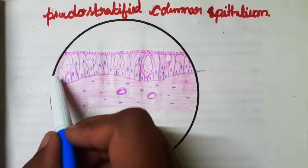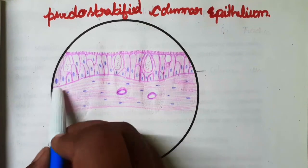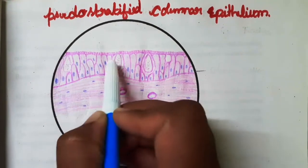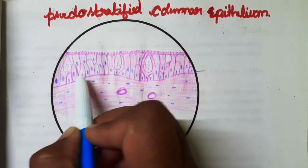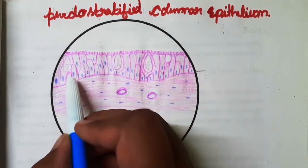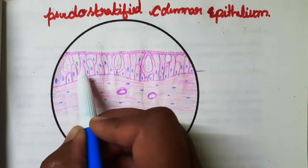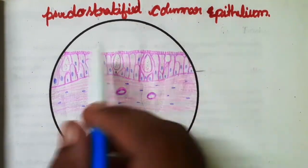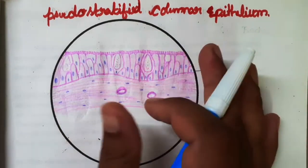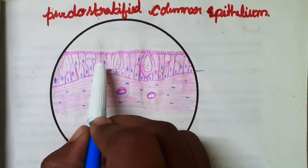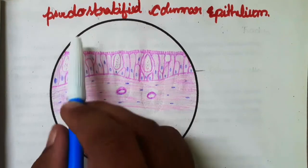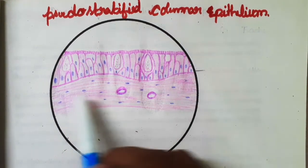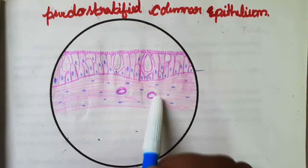Here you can see the columnar cells with nuclei at one position, the goblet cells, and other columnar cells with nuclei at different levels. Because the nuclei appear at different levels, the tissue looks like a stratified layer — that is why it is known as pseudostratified columnar epithelium. Below is the connective tissue and blood vessels.